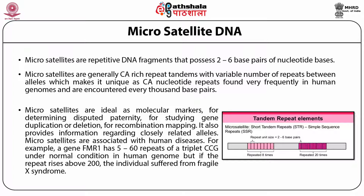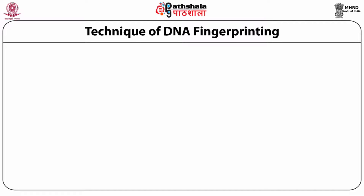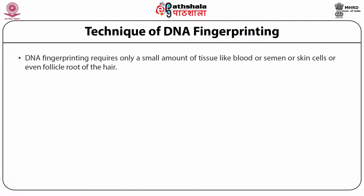The mini-satellite and microsatellite DNA repeat segments do not have any specific function in DNA structure, but their existence is of great importance. Satellite DNAs have a crucial role in the construction of genetic maps and isolation of genes responsible for causing human disease. DNA fingerprinting techniques would not have been developed without these satellite DNAs. DNA fingerprinting requires only a small amount of tissue — such as blood, semen, skin cells, or even the follicle root of hair. Typically, DNA content of about 100,000 cells or about 1 microgram is sufficient.